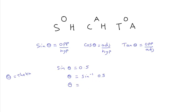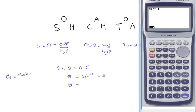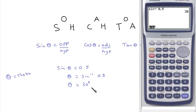Looking at the calculator: in order to do the inverse of the sine, cosine, or tangent, we use the shift or second function key. So here I'm going to press shift, then sine, which gives me sine to the minus 1 — the inverse sine — of 0.5. And that equals 30 degrees. So an angle that has a sine of 0.5 is 30 degrees.